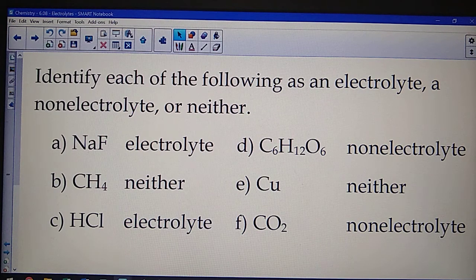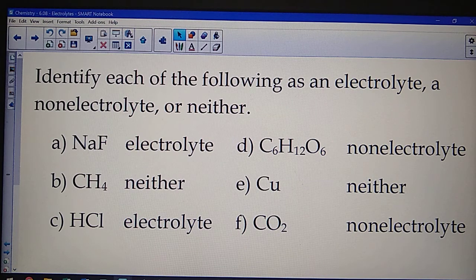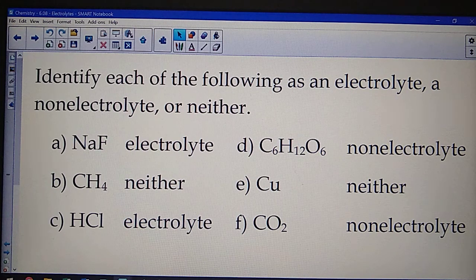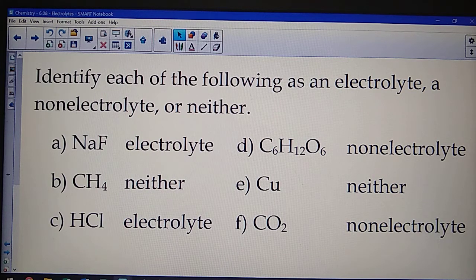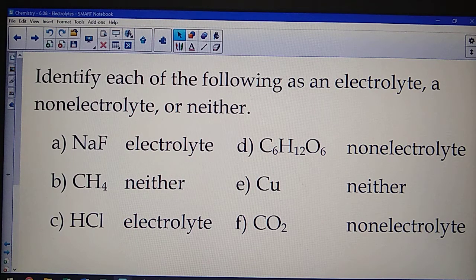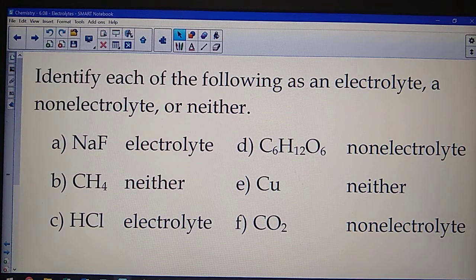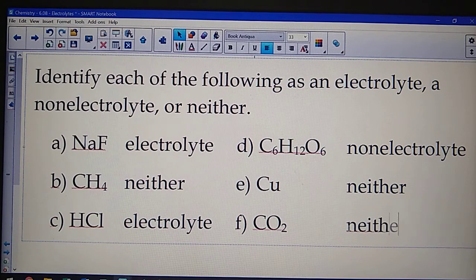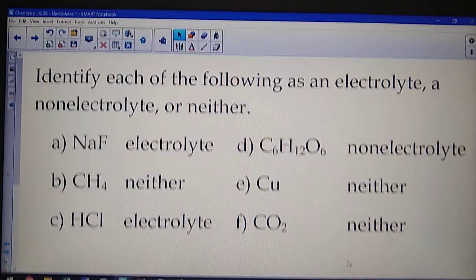E, copper. Copper is a good conductor of electricity, but it will not dissolve in water. So although it's a good conductor, it is not an electrolyte or a non-electrolyte. And finally, F, carbon dioxide. Carbon dioxide is non-polar. So like B, methane, it will not dissolve in water, and therefore be neither.